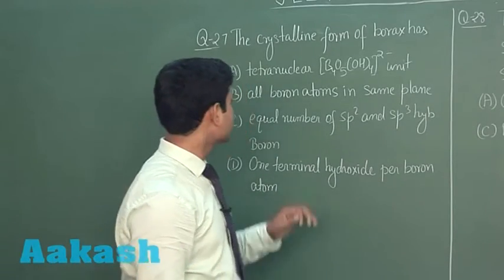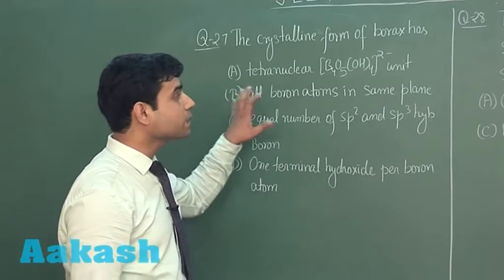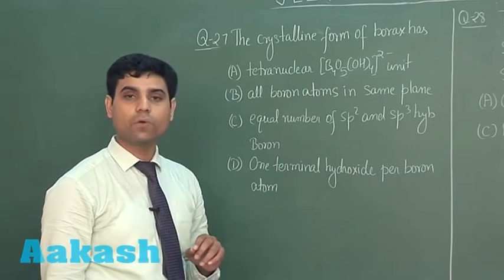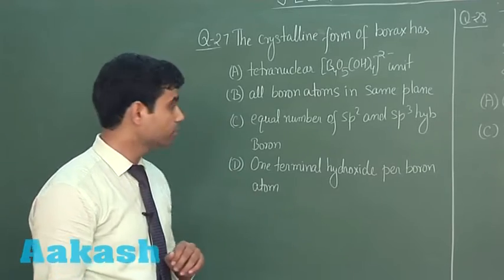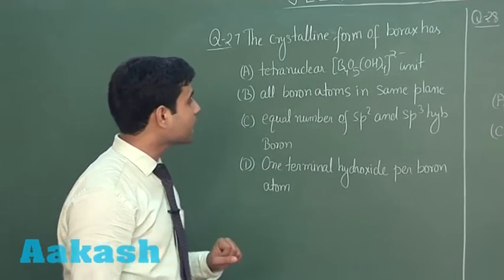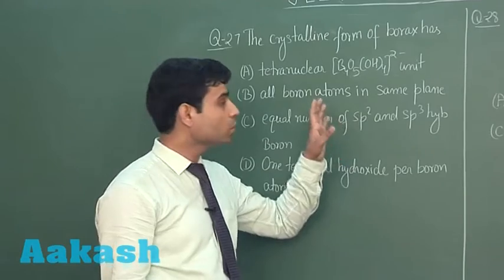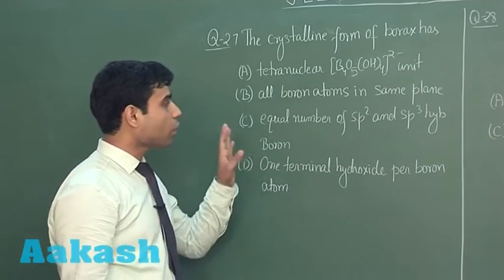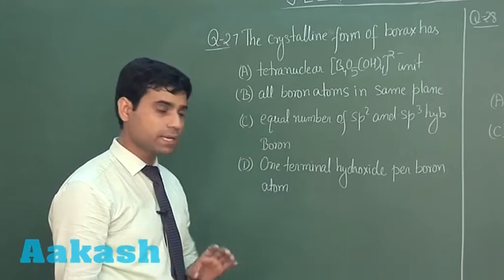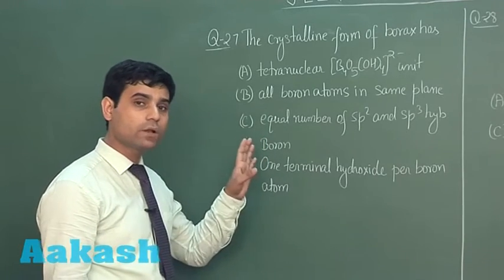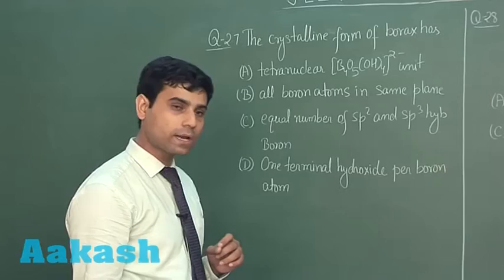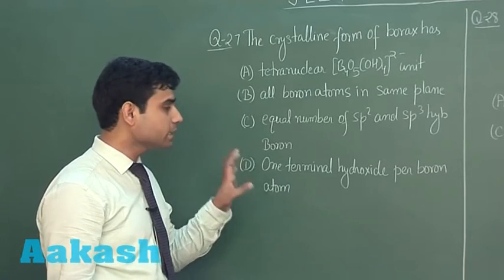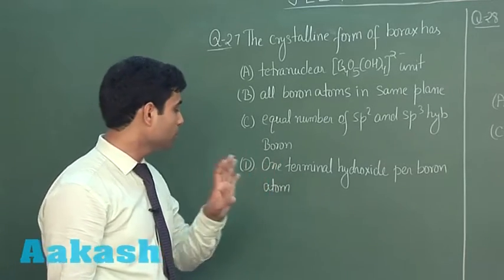This is the next question: the crystalline form of borax, Na₂B₄O₇·10H₂O. The first option is a tetranuclear B₄O₅(OH)₄²⁻ unit. Second option says all boron atoms are in the same plane. Third option is equal number of sp2 and sp3 hybridized boron atoms, and the fourth option says one terminal hydroxide per boron atom.